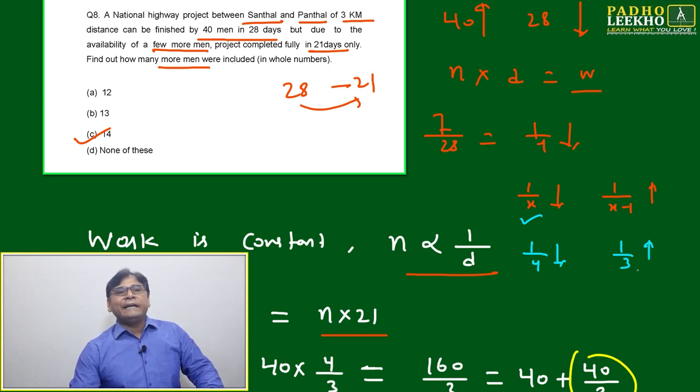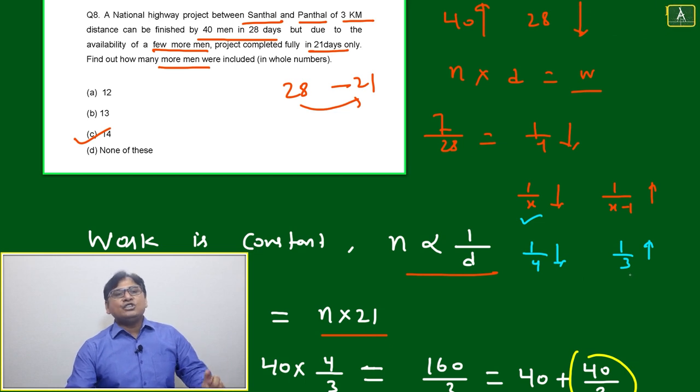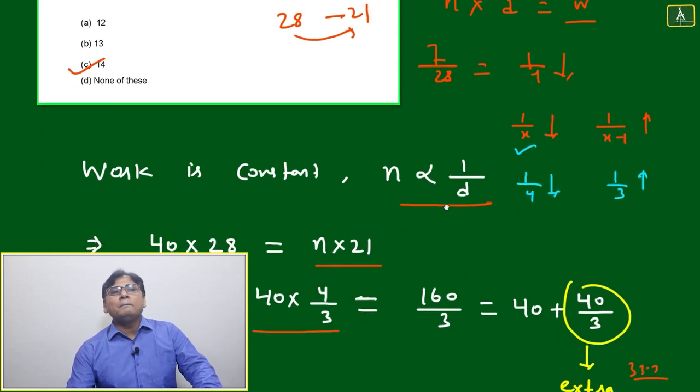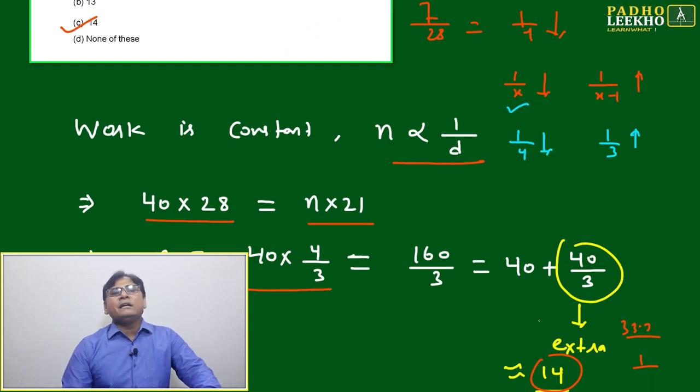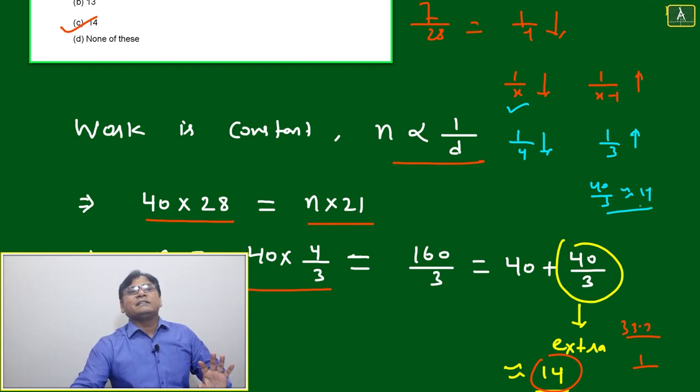1 by 4 is decreased means 28 to 21. It will change to 40 to 1 by 3 of 40. 1 by 3 of 40 will not come as an exact number. Number of persons will not be decimal. We will take 40 by 3, approximately 14. We can't take exactly, exactly it will be 13.33, but we can't take 13.3 persons.